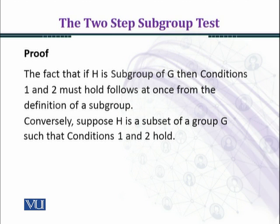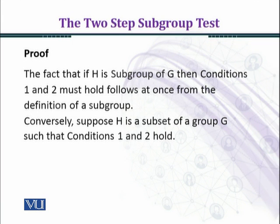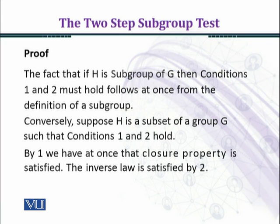Suppose H is a subset of a group G such that condition one and two hold. Condition one states: for every a, b belonging to H, a star b belongs to H. Condition two states: for every a belonging to H, a inverse belongs to H. These two conditions are holding and we need to prove that H is a subgroup of G.